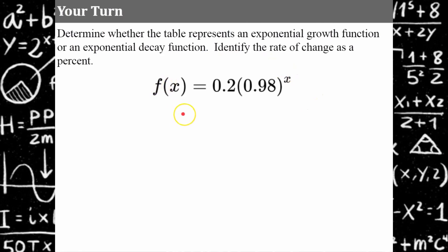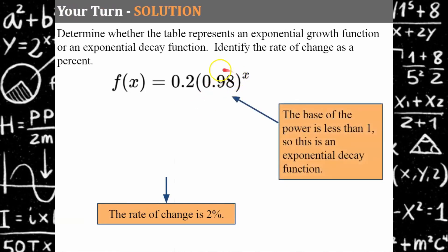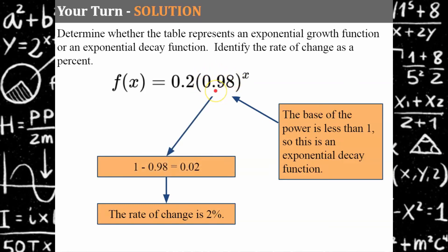Your turn — identify whether this is exponential growth or decay and identify the rate of change as a percent. Please pause, then come back. Welcome back. We have a base of less than one, so this is an exponential decay function. We subtract from the whole: one minus 0.98 gives us a rate of change of two percent.